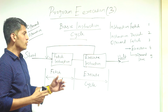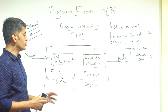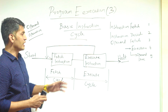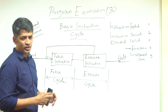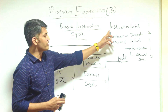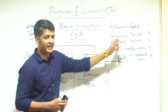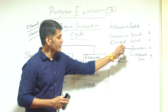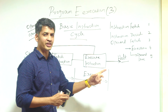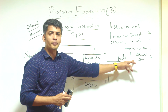During instruction execution, there are five stages. The first is instruction fetch, the second is instruction decode, the third is operand fetch, the fourth is execution, and the last one is operand store.